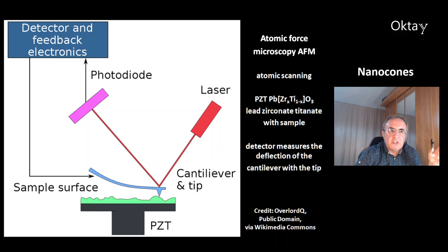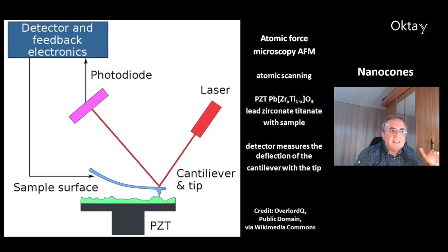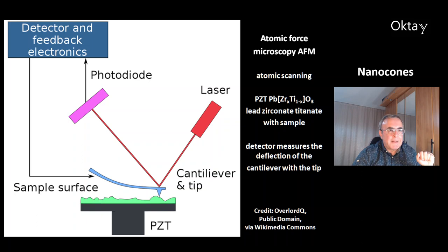This is an overview of atomic force microscopy (AFM), which involves scanning at atomic level. You can see here a PZT — that's a lead zirconate titanate. The green element is the sample. There is a cantilever with a tip. As the tip moves along the sample, the cantilever goes up and down. This is detected by a laser beam, using a photodiode detector. With this apparatus you can scan at atomic level.